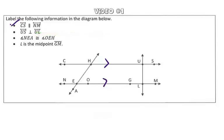And what we learned is that perpendicular lines are lines that intersect at a 90 degree angle. So to show that line US is perpendicular to line UL, we use our 90 degree angle symbol, which is a box.